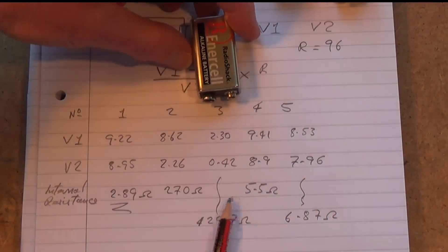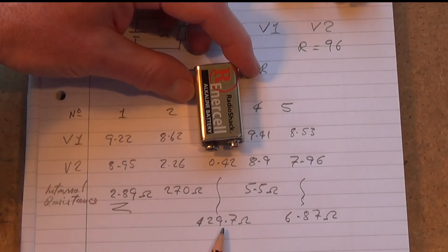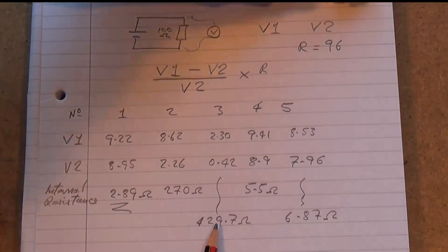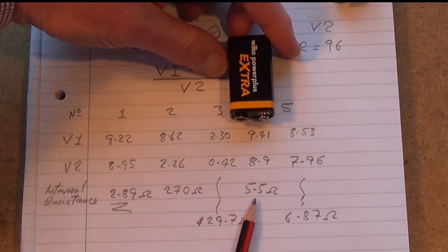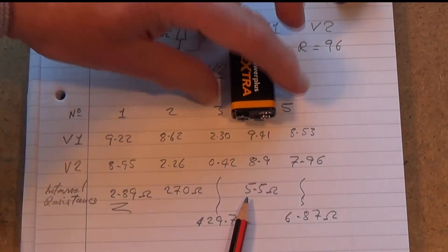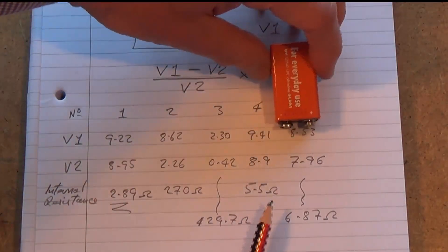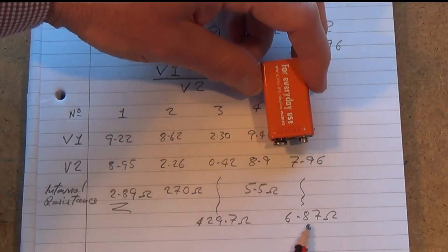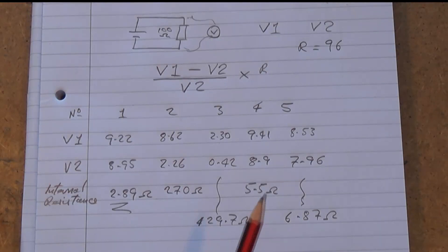Battery number three has an internal resistance of 429 ohms, so again that's clearly well dead. Battery number four was 5.5 ohms, so that's a keeper. Keep him. And then battery number five was 6.7 ohms, so again that's a good battery to keep. As I say, this is not an exact science.